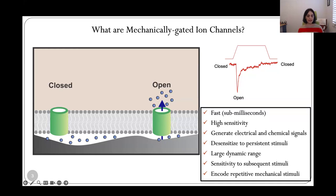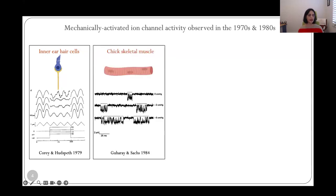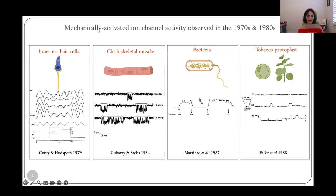The first evidence for the existence of mechanically activated channels came from beautiful work done by David Corey and Jim Hudspeth in the late 70s. They were looking at inner ear hair cells, and they showed for the first time that these cells had mechanically activated currents. A few years after that, Fred Sachs' lab showed in chick skeletal muscles the presence of mechanically activated channels as well, and these were stretch activated, that is, activated by membrane stretch. Shortly after, they were also discovered in bacteria as well as in plants.